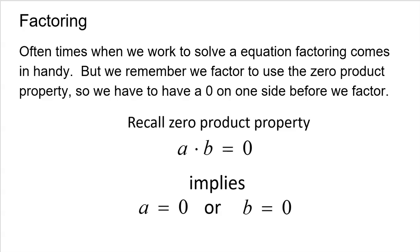In these medium-level problems, what makes them tougher is that we're going to have to factor. When we work to solve an equation, factoring comes in handy. We factor to use the zero product property, and we need to have a zero on one side for that to happen. The zero product property is awesome because when you factor — getting something times something, A times B — and it equals zero, one of those two things has to be zero, because the only way A times B equals zero is if A or B equals zero.